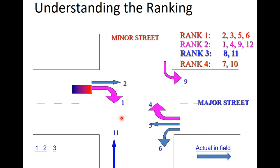You can understand the meaning of this ranking through this figure. Suppose at a two-way stop control intersection a vehicle arrives from the minor street — that is movement number 11 — and when it arrives at the stop line, the driver finds a vehicle already waiting on the major street that is to go right, movement number 1. Both movement number 1 and movement number 11 are looking for a gap in stream number 5. The order of priority is that movement number 1 is rank 2 and movement number 11 is rank 3. Therefore, the first gap in stream number 5 must be utilized by movement number 1, and movement 11 should wait for the next gap.